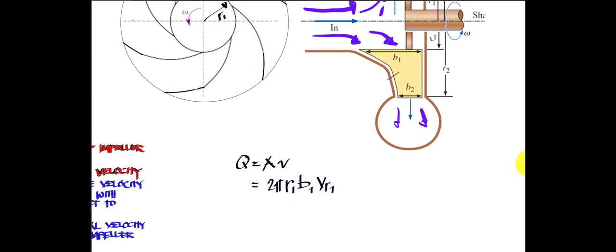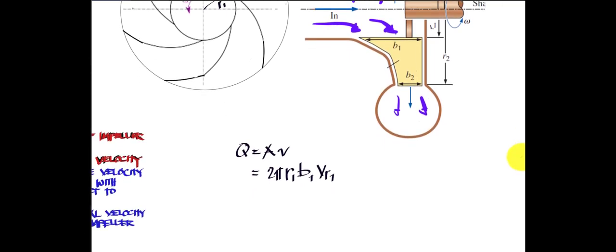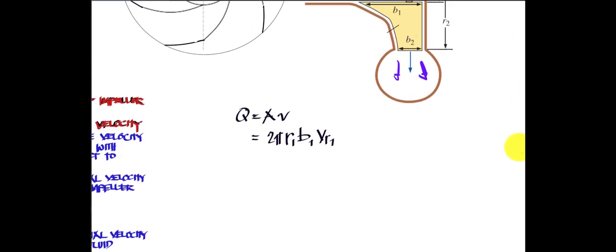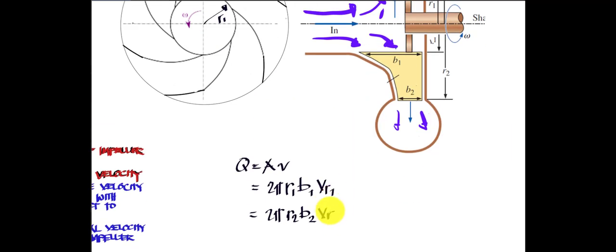This equation is for point one. By the continuity equation, the volume flow rate entering equals the volume flow rate leaving. For the outlet, the volume flow rate is Q equals 2π r2 b2 times Vr2, where Vr2 is the radial flow velocity at point two. The volume flow rates are equal; only the velocity varies due to the different blade thickness at inlet and outlet.